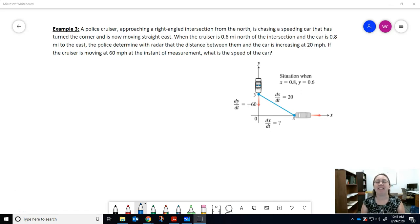Alright, for our next example we have an exciting scenario with a police car chase. A police cruiser approaching a right-angled intersection from the north is chasing a speeding car that has turned the corner and is now moving straight east. This is the speeding car.